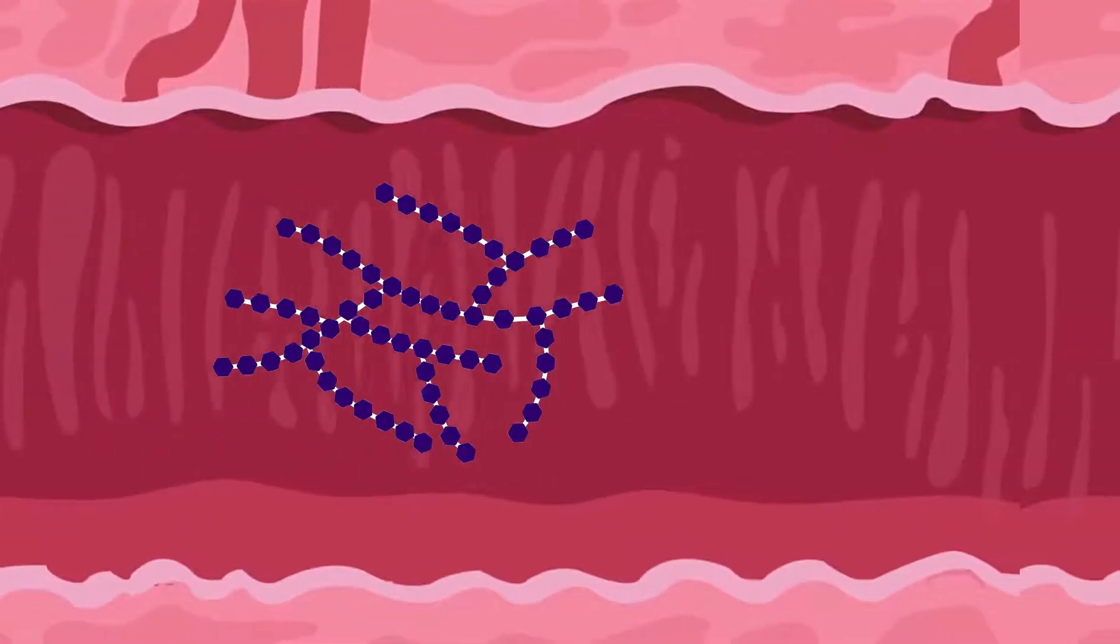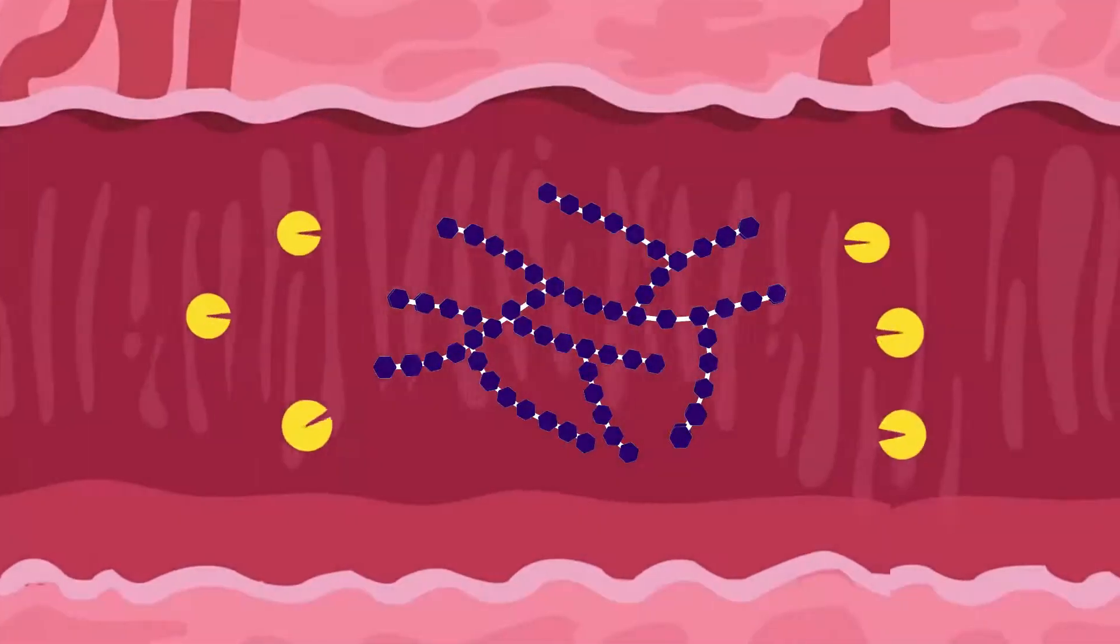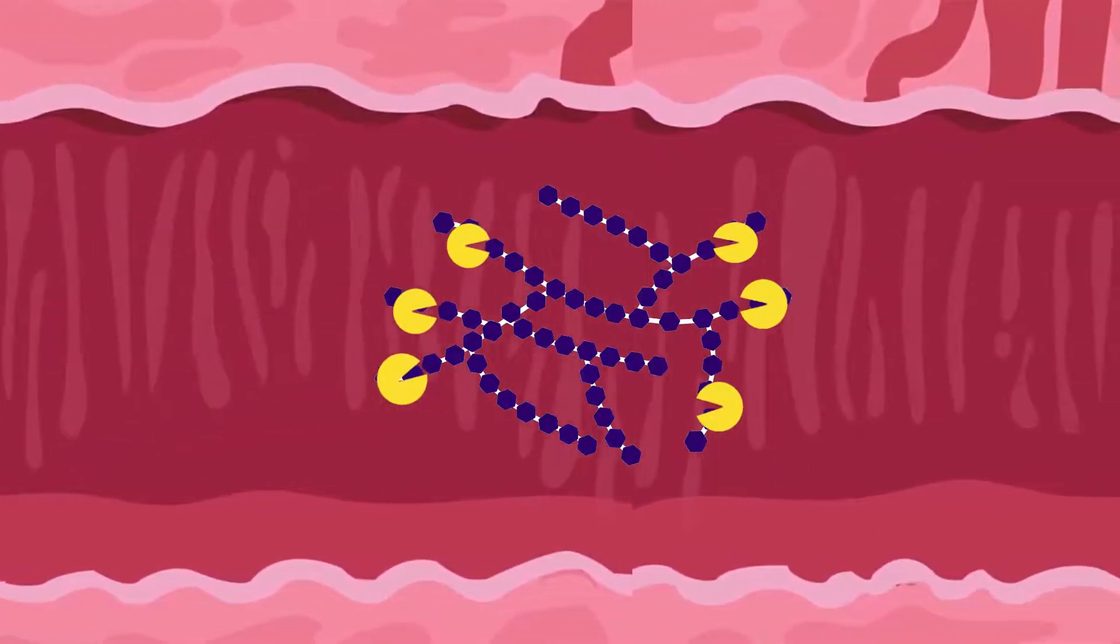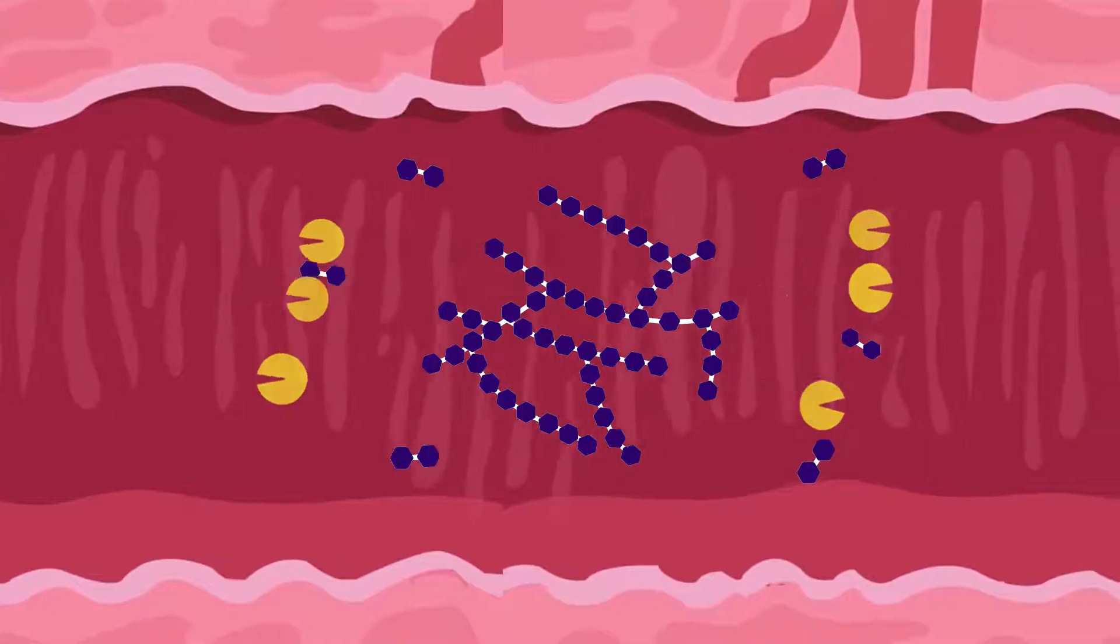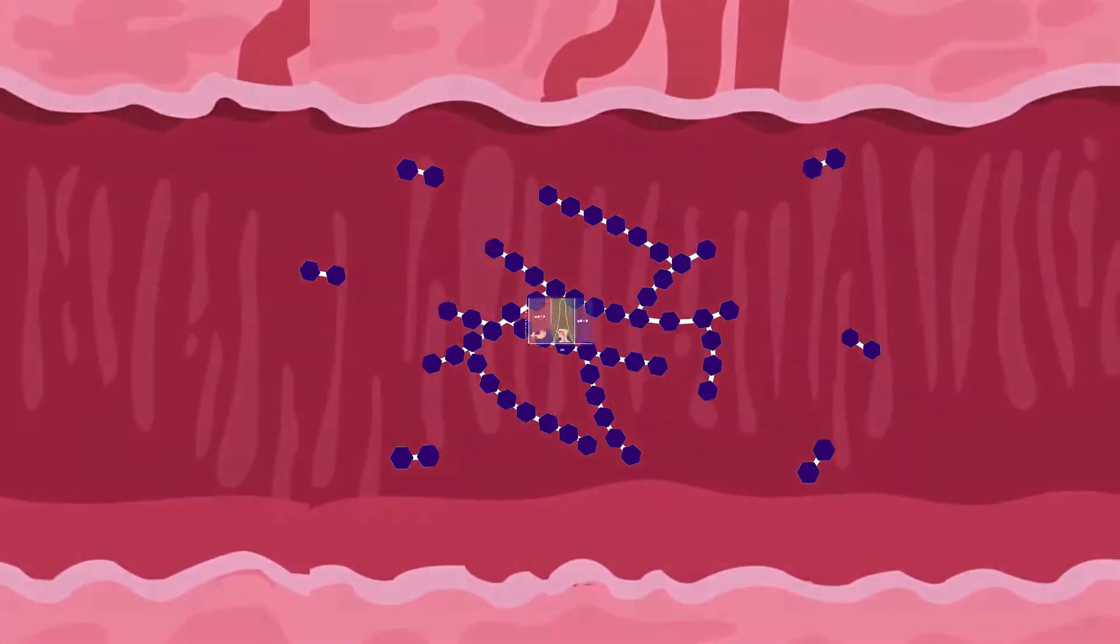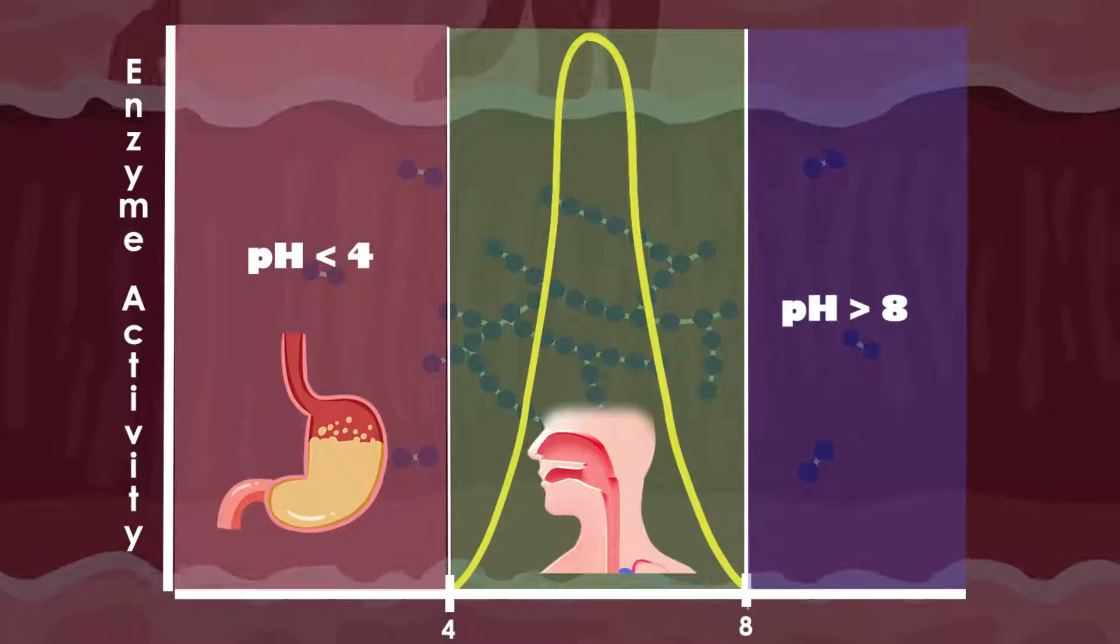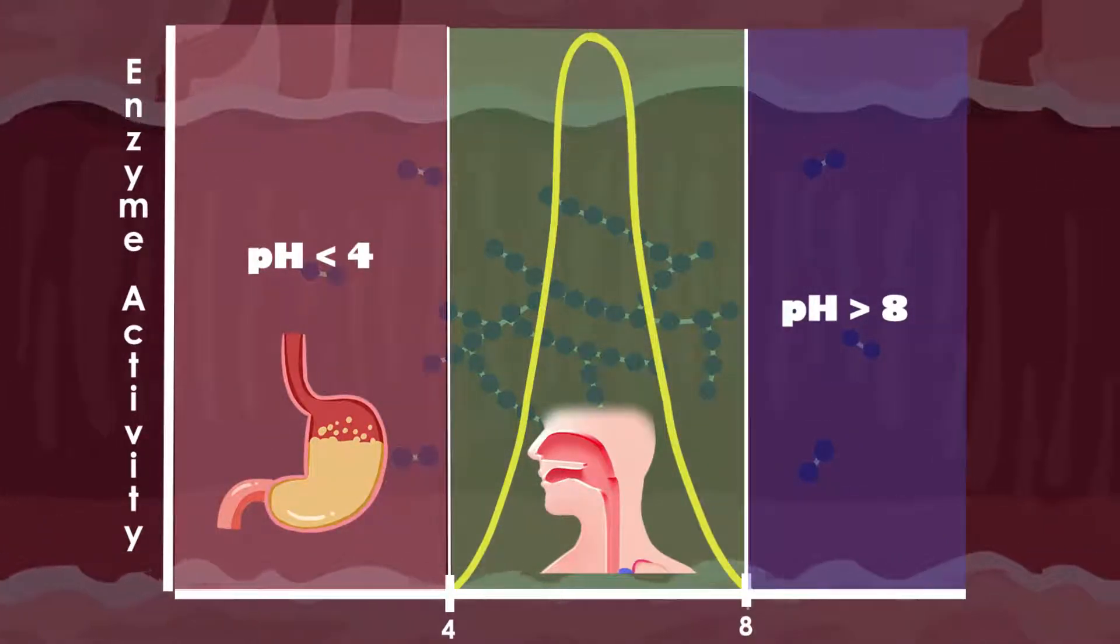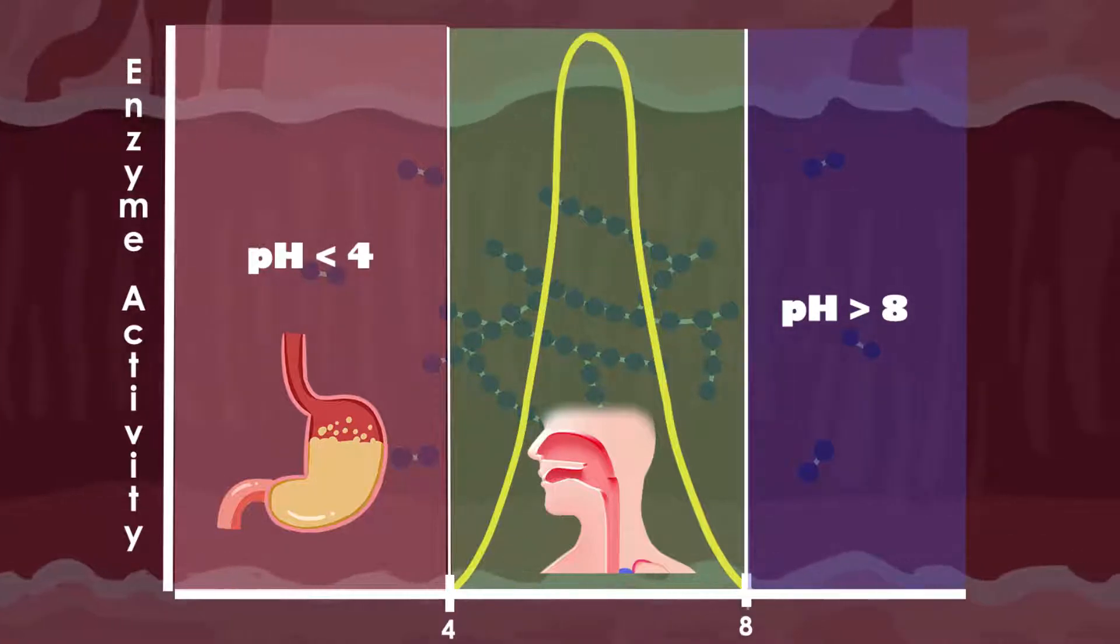That's why starch digestion begins as soon as you put it in your mouth. Salivary amylase acts on starch and breaks it down into maltose. However, it is capable of converting only about 30% of all the starch into maltose. This is because salivary amylase acts on starch only for as long as the food travels from the mouth through the esophagus.